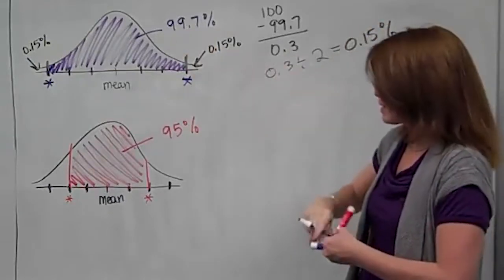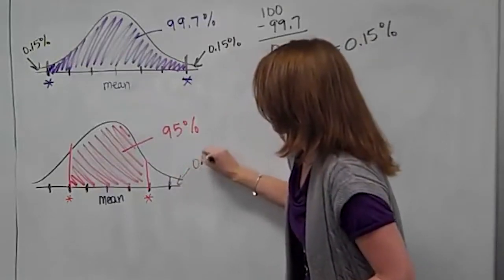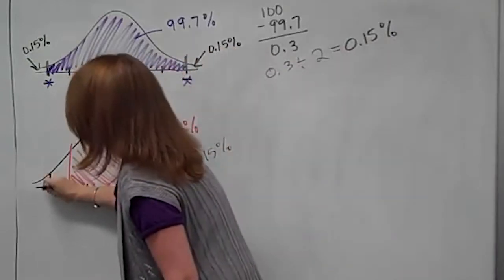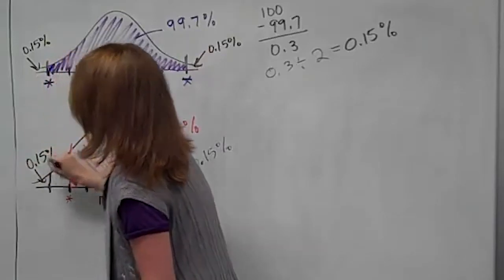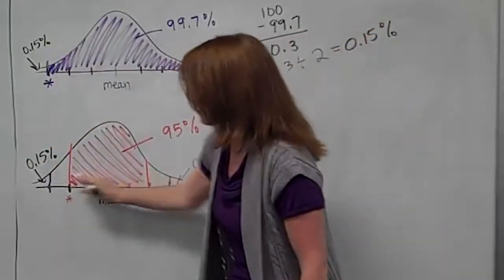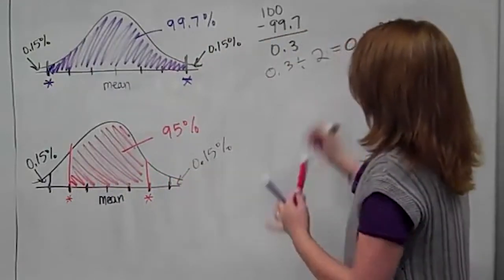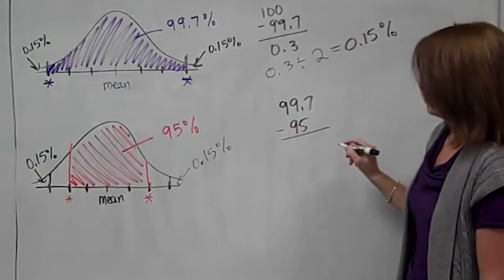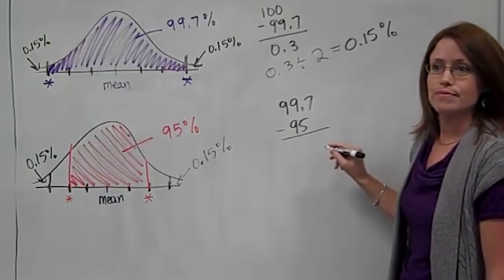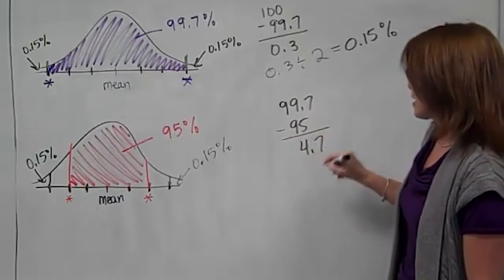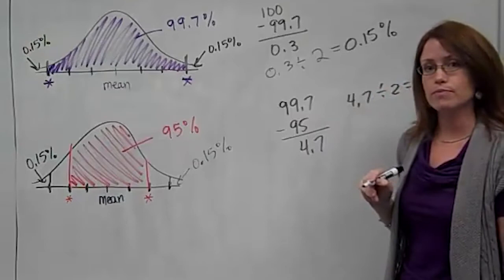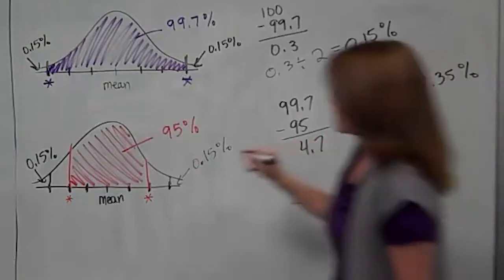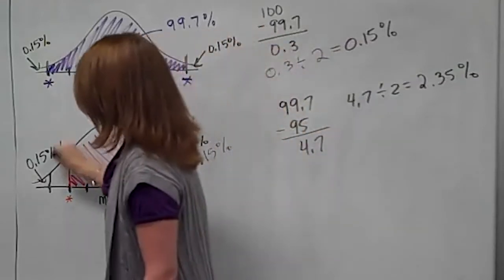You could subtract 95 from 100, or subtract it from the previous number. The tail end section beyond three standard deviations is still 0.15% — that's true for all of them. To find these two middle sections between two and three standard deviations, I can say 99.7 minus 95, which gives 4.7. Then cut it in half because it's symmetric. You get 2.35%. That tells you how much you have in each of those sections between two and three standard deviations.